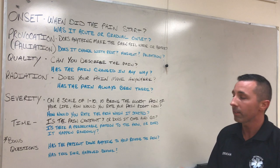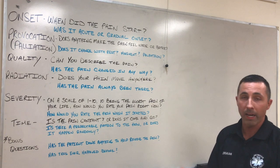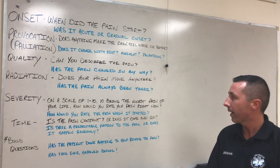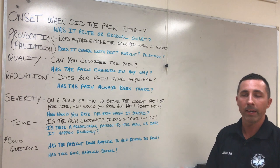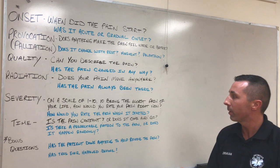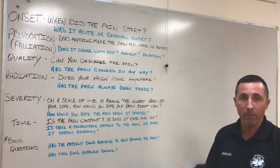T is for Time. When you get to time, make sure you don't ask when the pain started — we've already asked that with onset. When you get to time, you want to ask your patient: is the pain constant, or does it come and go? This is going to help us determine how severe it is. Another good clarifying question to ask would be: is there a predictable pattern to the pain, or does it happen randomly?